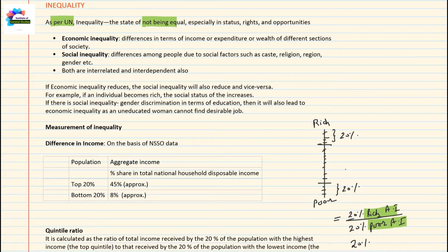Similarly, there are also differences in social status. If someone is high caste, society sometimes considers that person to be superior to the low caste person. There is also inequality in rights — for example, if someone is not allowed to cast their vote in elections, then that will create inequality in terms of rights.